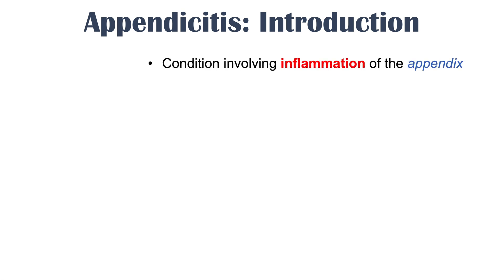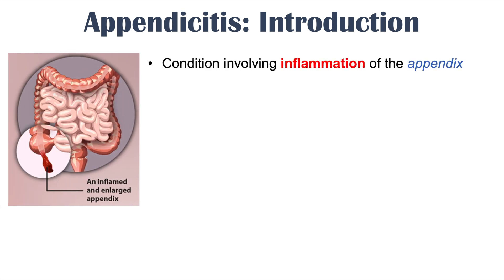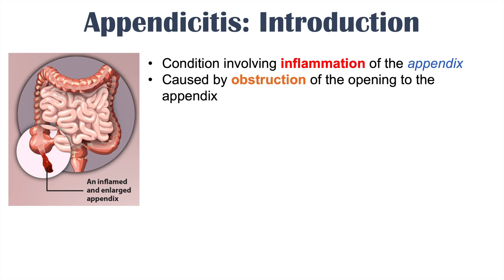Appendicitis is a condition involving inflammation of the appendix. The word appendicitis — 'itis' means inflammation, and the prefix 'appendus' refers to the appendix. So it's inflammation of the appendix.